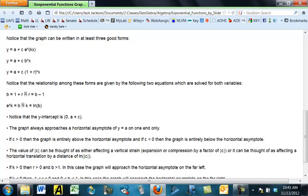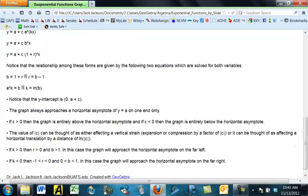If K is positive, then R is positive and B is greater than 1, and the graph will approach the horizontal asymptote on the far left. If K is negative, then R is between negative 1 and 0, and B is between 0 and 1, and the graph will approach the horizontal asymptote on the far right.